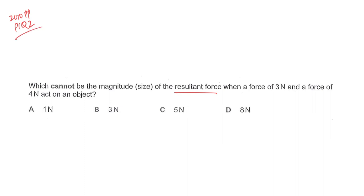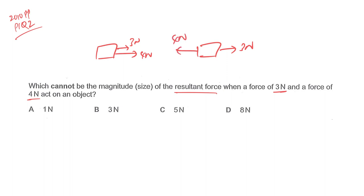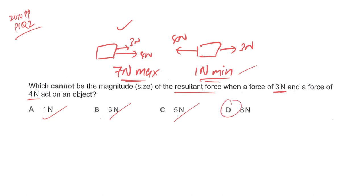Pure Physics 2010 Question 2: when you have 3 Newton and 4 Newton acting on an object, what is the resultant? When both forces are in the same direction, the resultant is 7 Newton — the maximum possible. When they are in opposite directions, the minimum is 1 Newton. So any value between 1 and 7 is possible. That means 1, 3, and 5 are all possible, but 8 Newton is the only impossible answer since the maximum is 7.